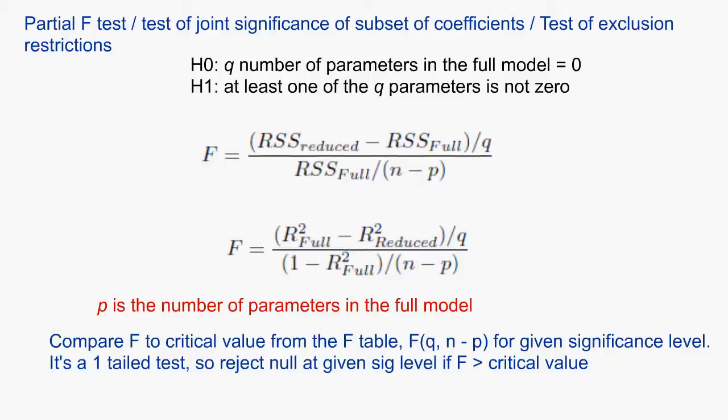Formally, we compare the F-stat to the critical values from the F-table where the degree of freedom is q, the number of parameters being tested to be zero, and the other degree of freedom is n minus p, where p stands for the number of parameters in the full model including the intercept. Note the F-stat can't be negative, so if you get a negative number, it means you probably got the differences the wrong way around.